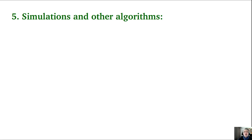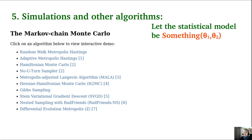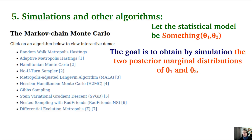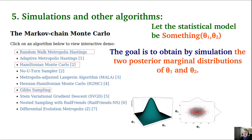Let's make some simulations with these algorithms. We assume a statistical model where the response variable has a probability distribution with parameters theta1 and theta2, and the goal is to obtain the two marginal posterior distributions by simulation. The eventual joint posterior distribution of theta1 and theta2 is shown as a 3D surface with marginal distributions projected on the sides — this is what we want to obtain.